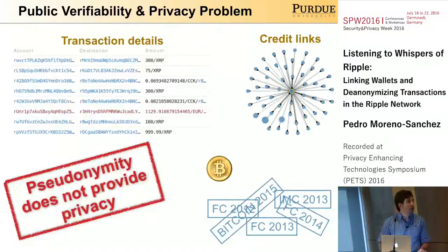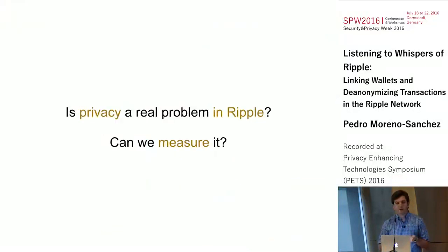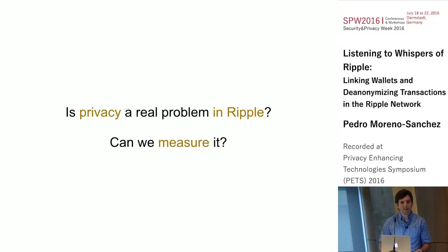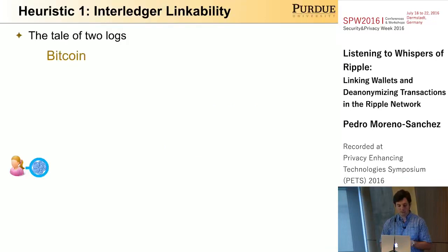The natural question that came to us is: given the differences between Bitcoin and the Ripple system, is privacy a real problem in the current Ripple system? And if so, can we really measure that privacy issue? The answer is yes. In order to answer these questions, we propose two different heuristics.